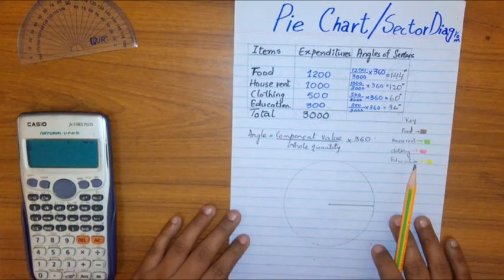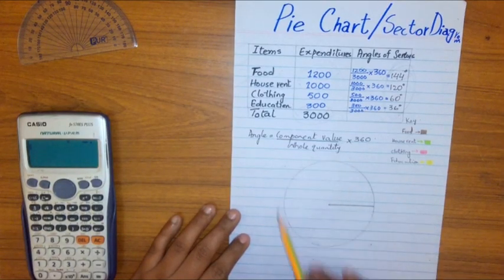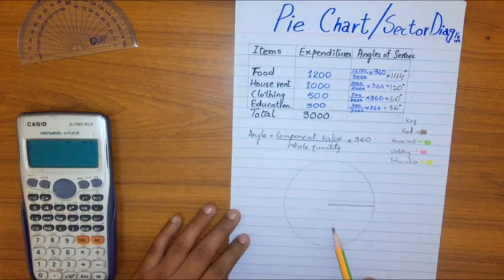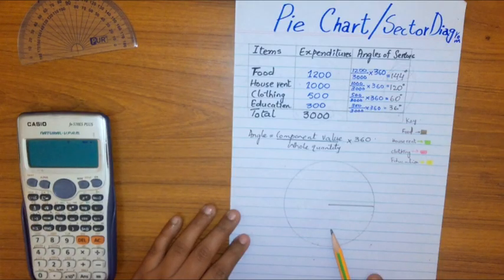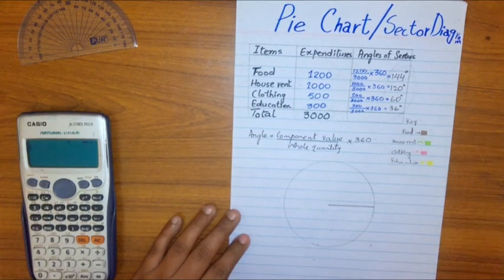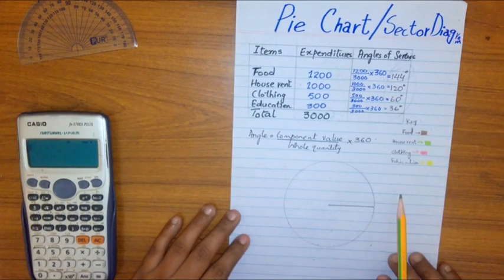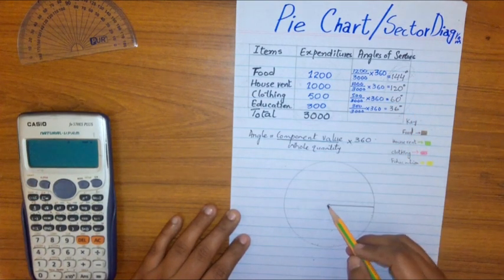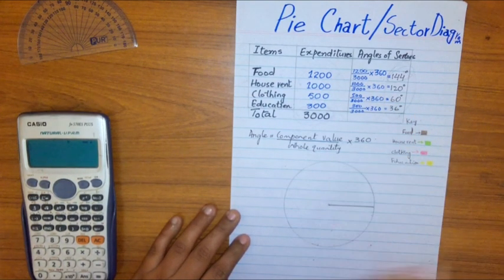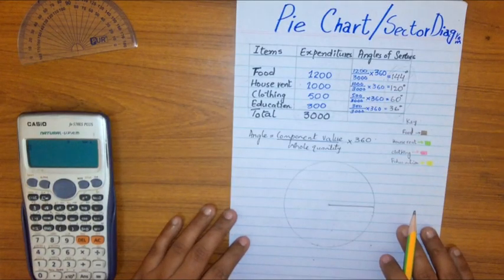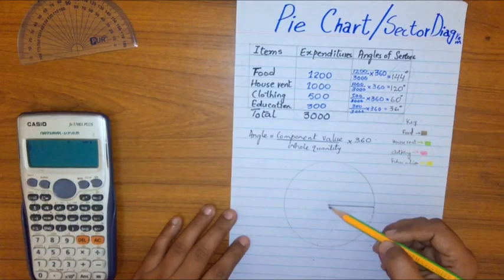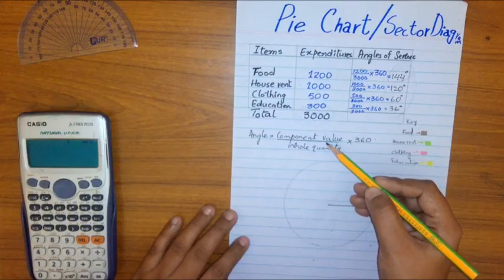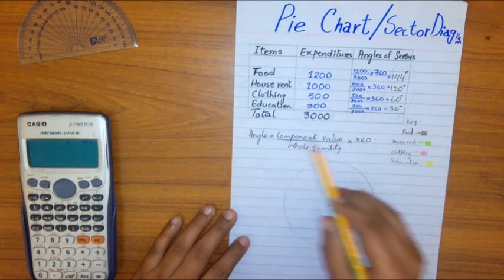First of all, for constructing a pie chart we need to draw a circle of any radius. Here I have drawn a circle of radius 4 centimeters. Now it's up to you whether you want a big circle or a small circle.